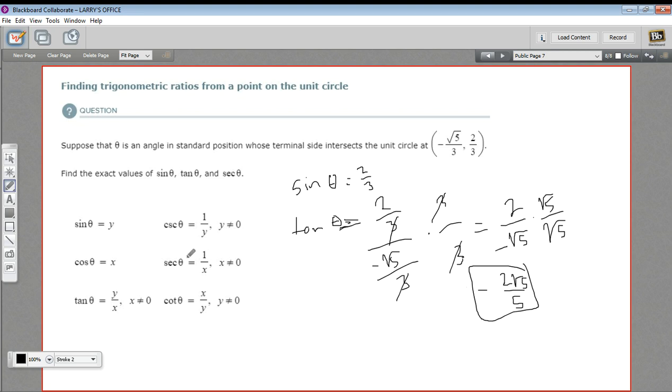And let's try the secant. So the secant is one over the cosine, so one over x. So the secant of theta is one over negative square root of five-thirds, which is the same thing as just flipping this fraction upside down. So I can write this as negative three over the square root of five.